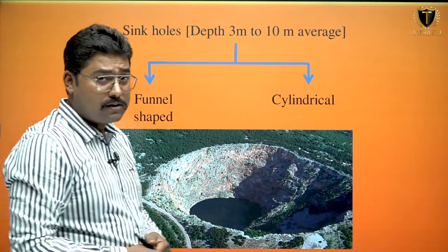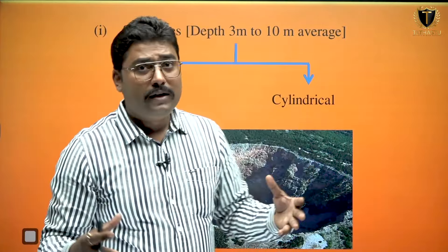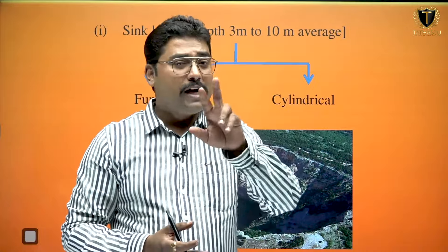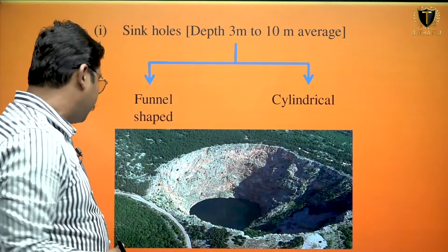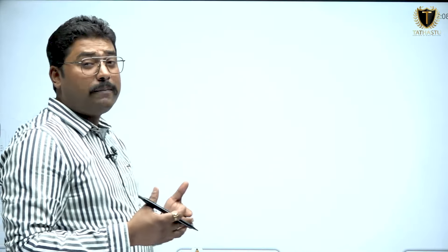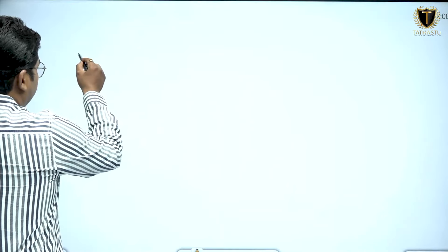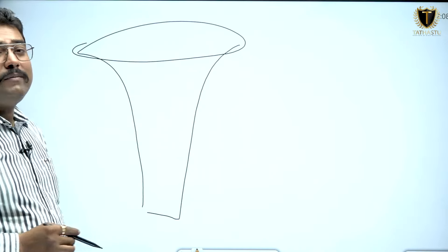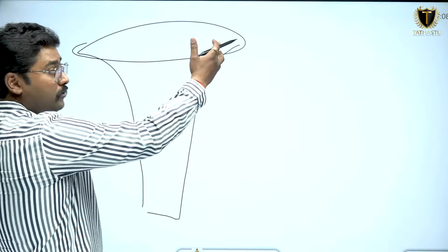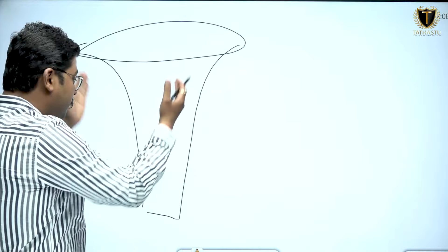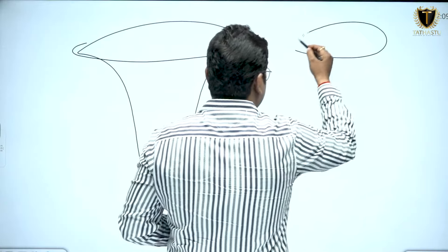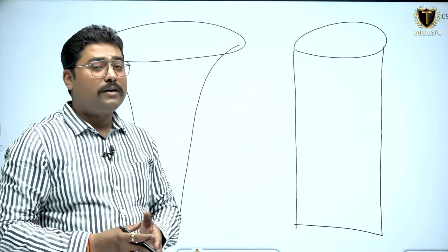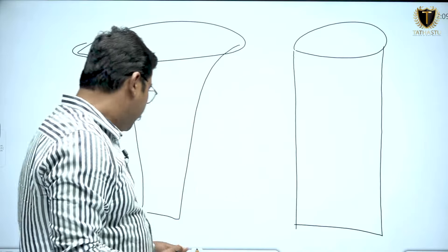Then sinkholes — mainly when the solution holes will become bigger, between 3 meters to 10 meters, they will be considered as sinkholes. Sinkholes are of two types: funnel shape and cylindrical shape. Funnel shape means there will be a wide opening over the top, and as we move down it will become narrow. Cylindrical shape means from top to bottom the width of the sinkhole will be more or less similar.